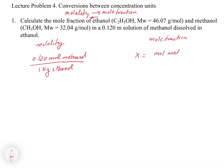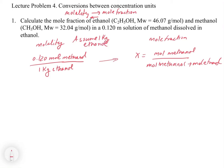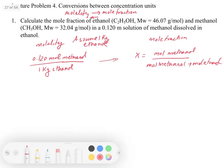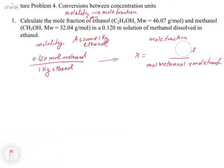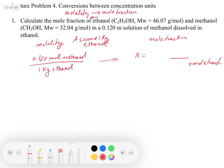For mole fraction of methanol, we need the moles of methanol divided by the moles of methanol plus the moles of ethanol — so we need both of those. That's what we need; we're going from one to the other. To make our lives easier, because we have the denominator being one kilogram of ethanol, let's just assume that we have one kilogram of ethanol. That makes things convenient, and we can explicitly state it as one kilogram of ethanol.